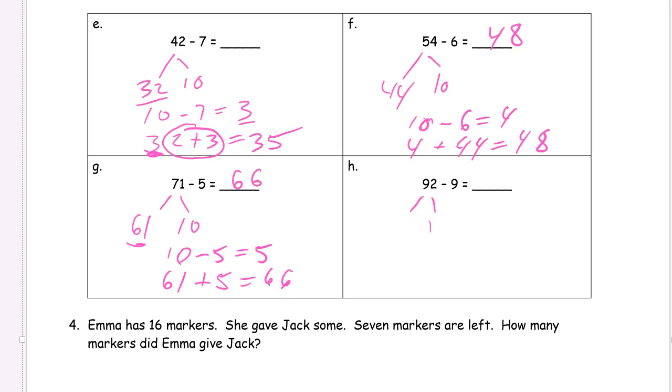92, that's going to be 10 and 82, and then we subtract from the 10. 10 minus 9 because it's easy because we practice our parts of 10 and you can just do it automatically and then we have the 82 plus the 1, 83.